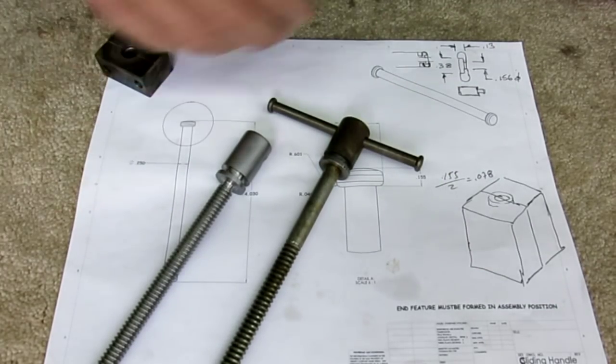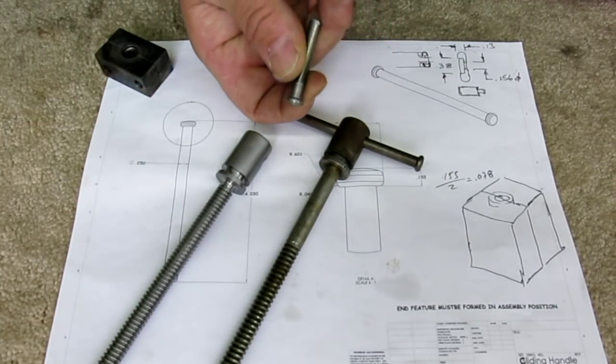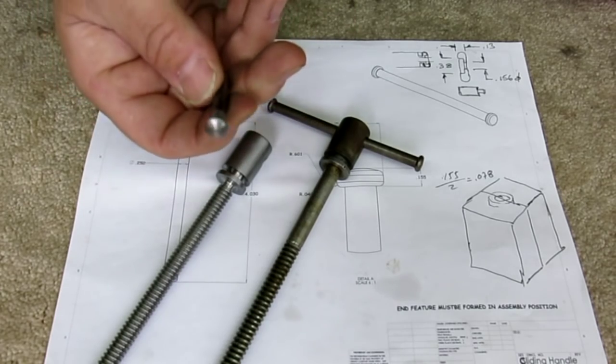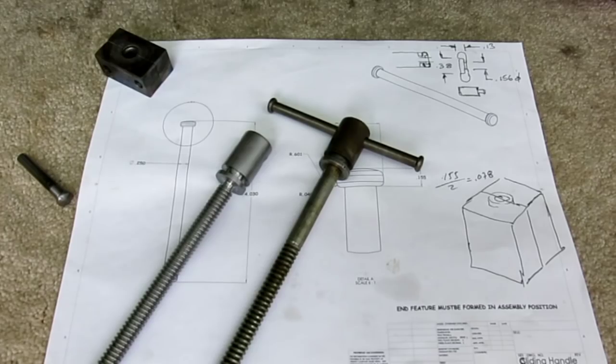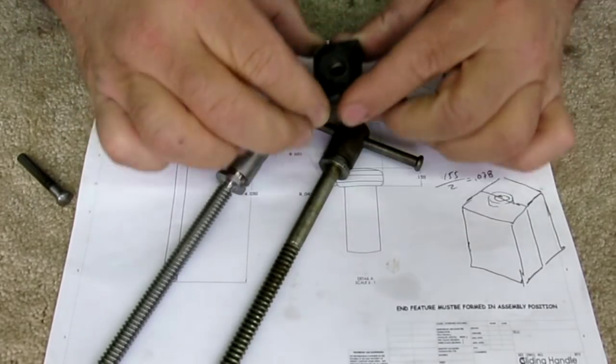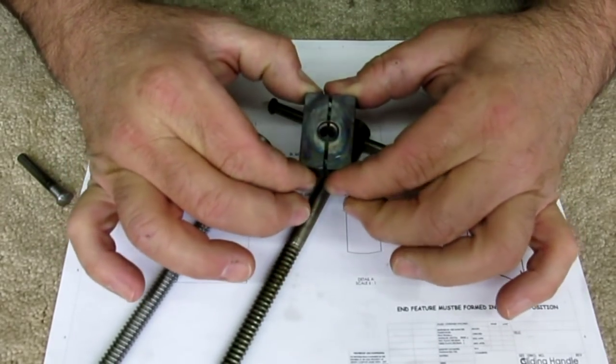Now, my original method that I was going to do this with is I created a little forming die. Let me open it up and take it apart, and you guys can kind of see the guts of that.